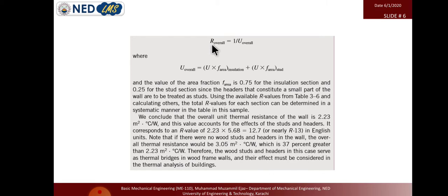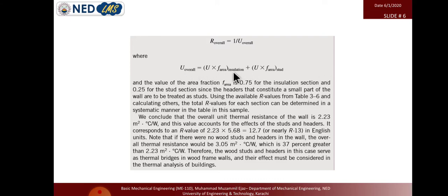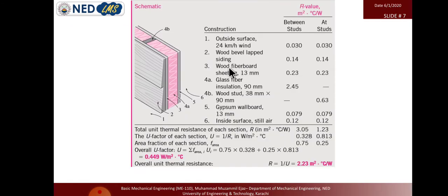The overall thermal resistance R = 1/U, and the overall heat transfer coefficient is the sum of the U-factor of the insulation area and the U-factor of the stud area, weighted by their area fractions: 75 percent for insulation and 25 percent for the stud. To solve this clearly, let's make a chart — listing all construction materials from outside to inside with their resistance values.